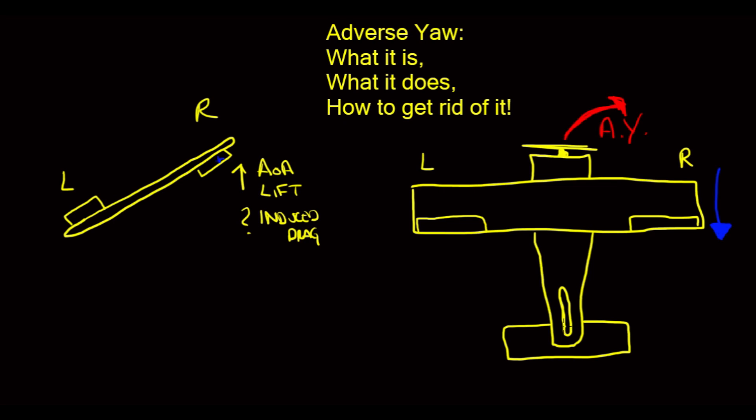So, banking to the left, we lead with a little left rudder. We bring our nose back to the right, or back straight ahead. And now we're in coordinated flight.